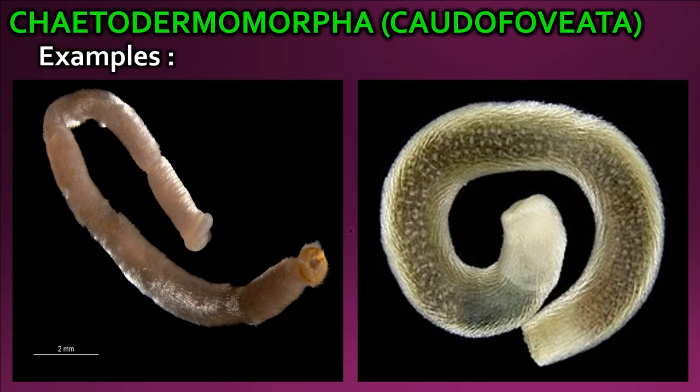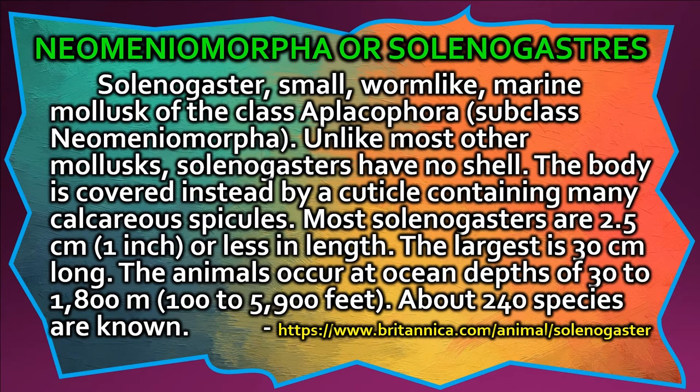Solanogasters are small worm-like marine molluscs of the class Aplacophora, subclass Neomeniomorpha. Unlike most other molluscs, solanogasters have no shell; the body is covered instead by a cuticle containing many calcareous spicules. Most solanogasters are 2.5 centimeters (one inch) or less in length; the largest is 30 centimeters long. The animals occur at ocean depths of 30 to 1,800 meters; about 240 species are known.